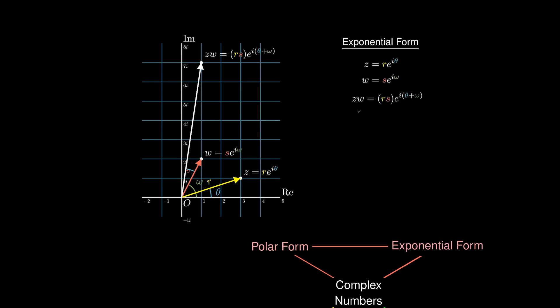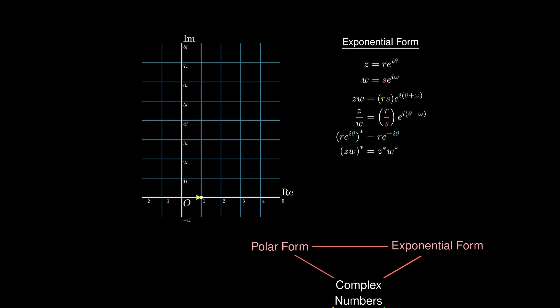We can obtain various exponential form properties. Something remarkable: when we rotate by an angle of π/2, we land at i, which means i = e^(iπ/2), and i can be interpreted as a rotation by 90 degrees.